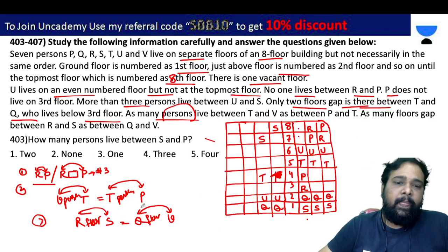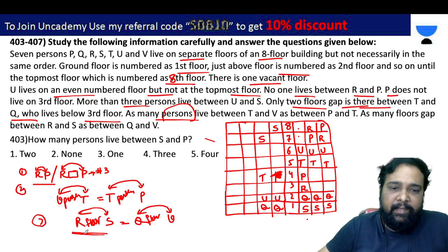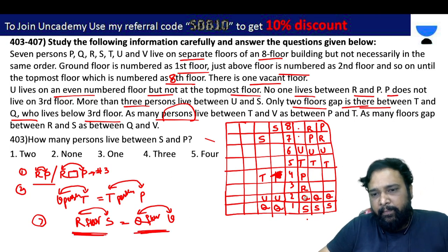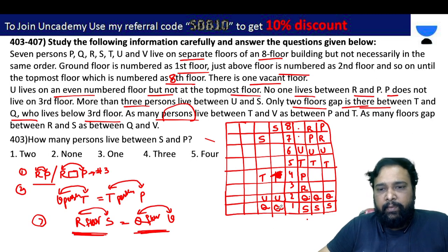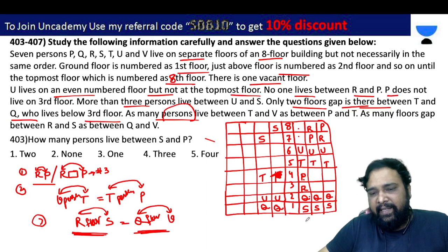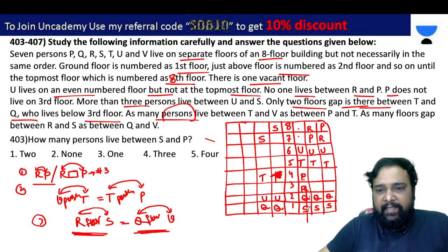So now we can see R and S on any floor, Q and V on any floor, and R and S form a floor gap. Q and V have one floor between them. This case is not possible. Close.